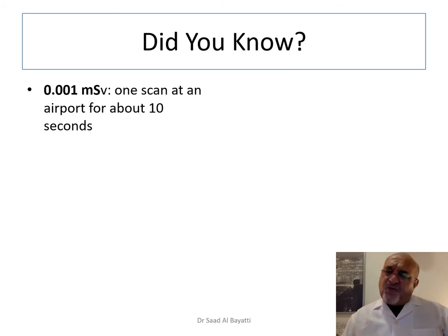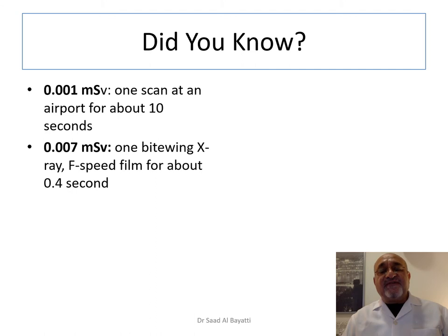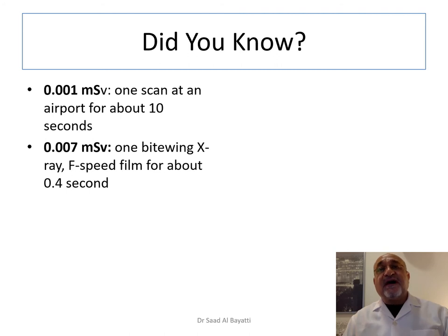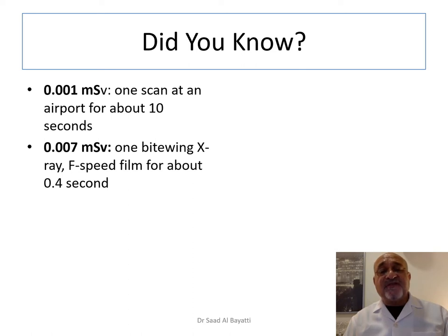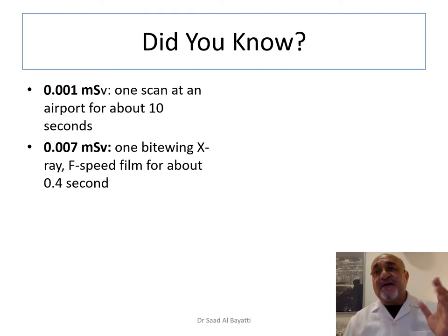Let's get an idea about the doses we face. Airport security scans, which are X-ray based, expose us to 0.001 millisieverts in about 10 seconds. If you take a periapical radiograph or a bitewing radiograph with F-speed film or a digital sensor, with an exposure time of around 0.4 seconds, you are exposed to 0.007 millisieverts — which is equal to around 8 microsieverts as previously stated.